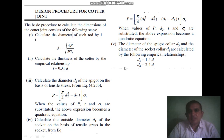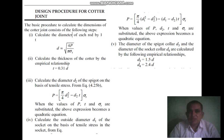The fourth step is to calculate the outside diameter D1 of the socket on the basis of tensile stress, using: P = (π/4)(D1² − D2²) × σt − (D1 − D2) × 2 × σt (rearranged). You can reshape the equation in terms of sigma t, sigma c, and tau. When values of P, D2, t, and sigma t are substituted, the expression becomes a quadratic equation.